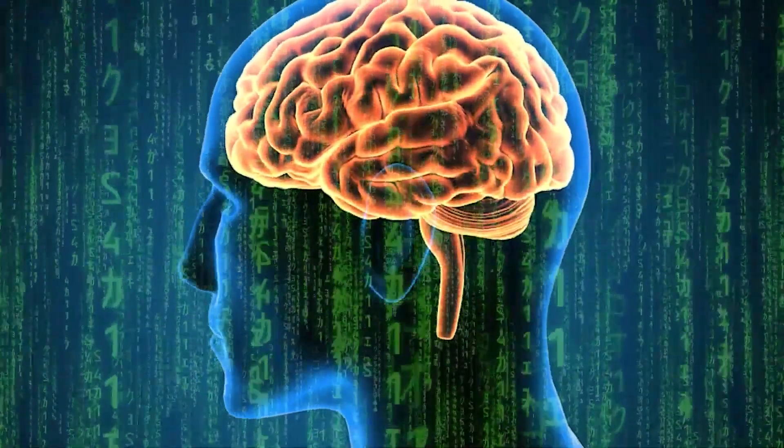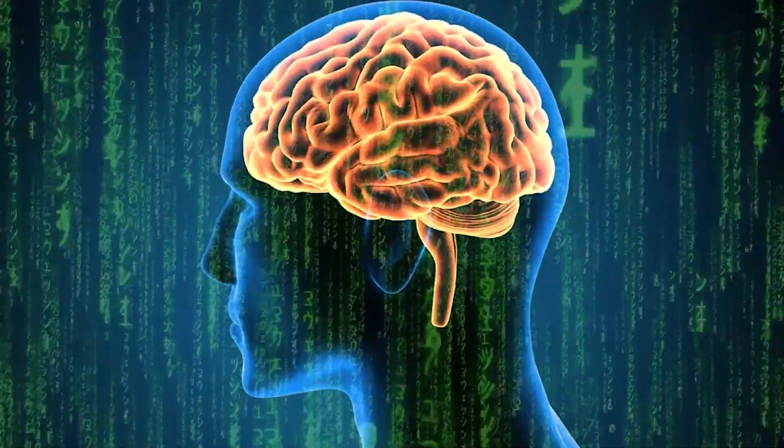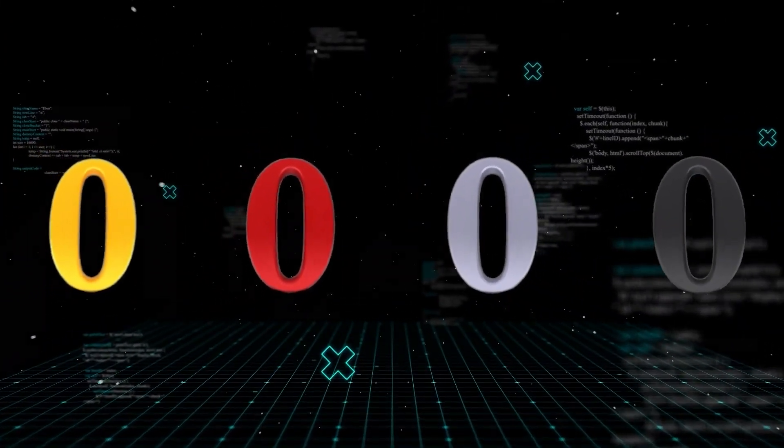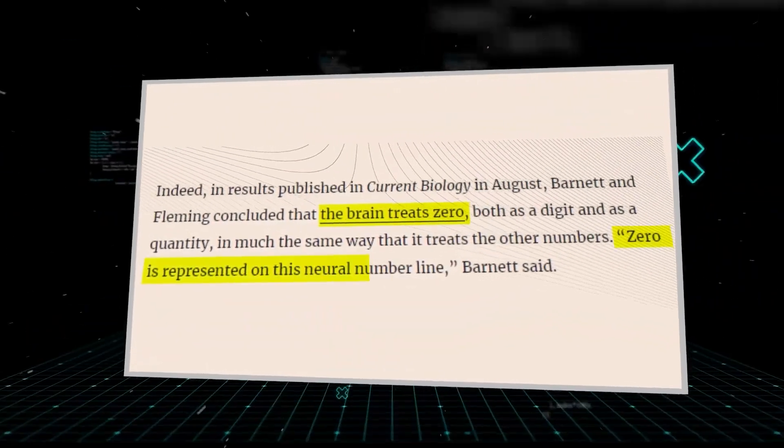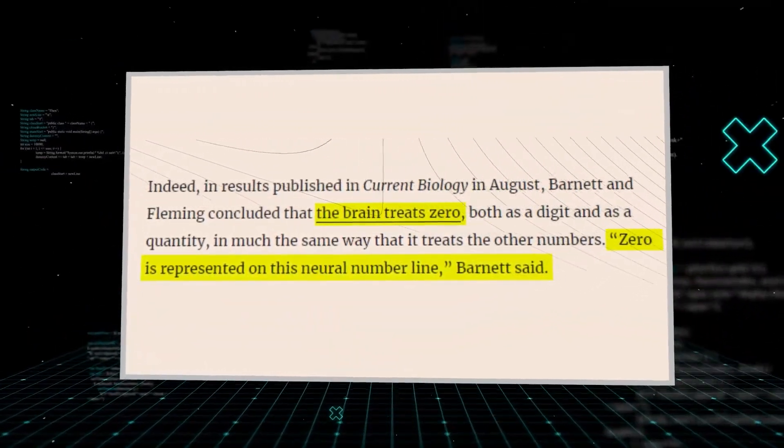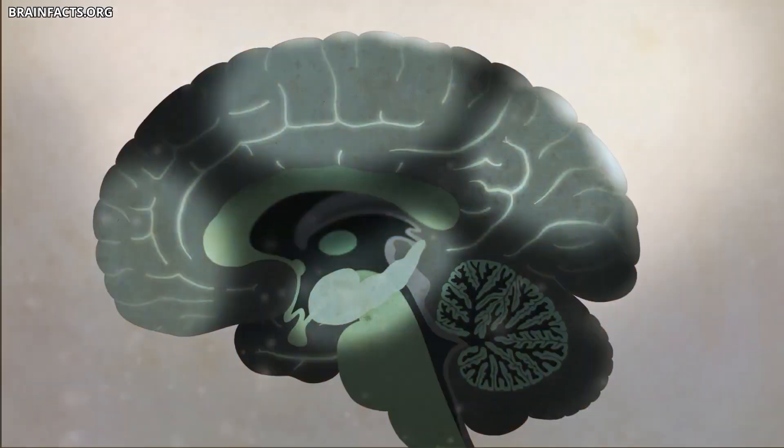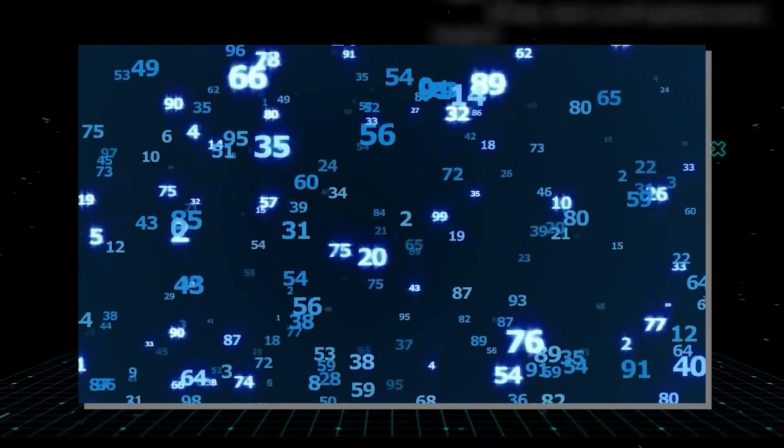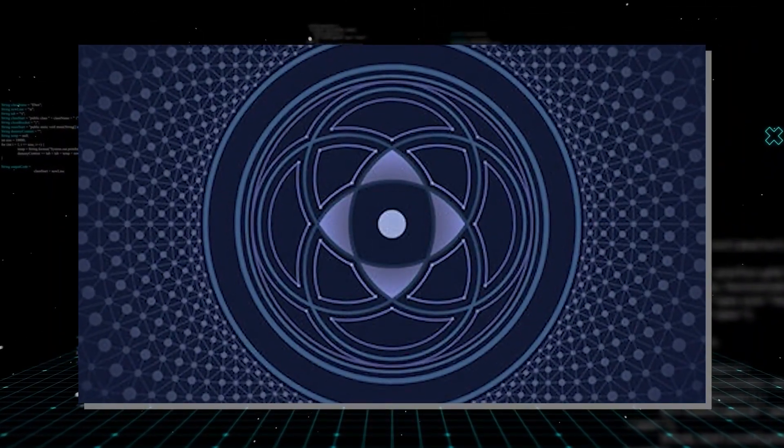Recent studies have begun to explore how the human brain represents numbers, but for a long time, no one has looked specifically at zero. Two independent studies, one led by Nieder and another by Barnett, have now revealed that the brain codes for zero similarly to other numbers, placing it on a mental number line. However, zero also occupies a special status, likely because it represents a paradox. It is something and yet nothing at the same time.